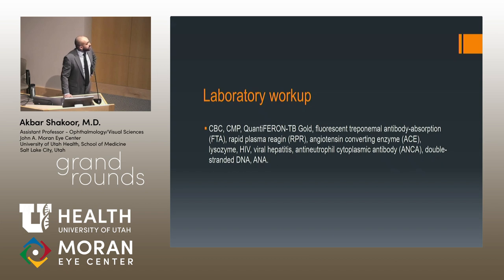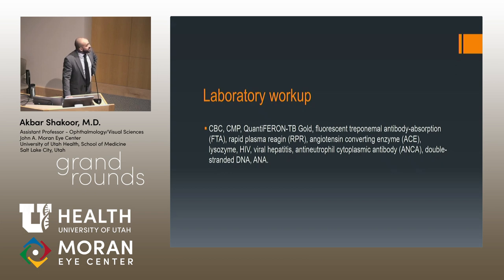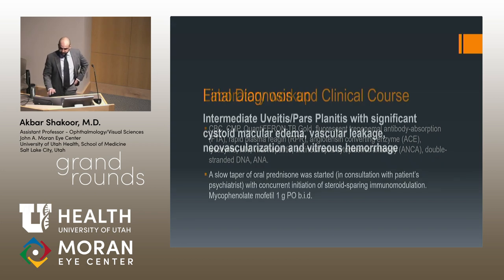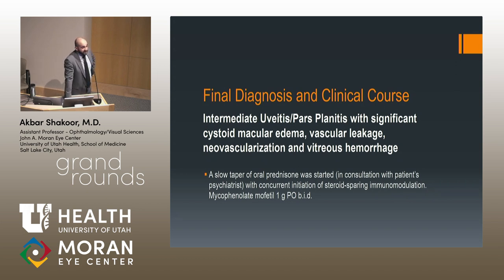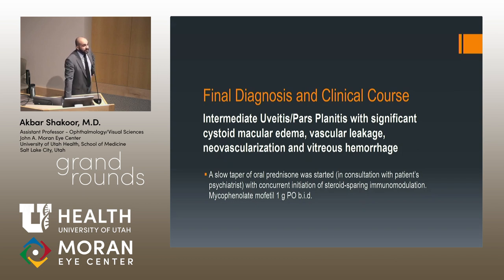We checked her for systemic issues. TB was negative, syphilis testing was negative, ACE, lysozyme, HIV, viral hepatitis — we looked for labs associated with retinal vasculitis and found them all to be negative. Our final diagnosis was intermediate uveitis of the pars planitis variety with significant cystoid macular edema, vascular leakage, neovascularization, and vitreous hemorrhage. We don't really know how long this had been going on, as she had been suicidal and had symptoms for three or four years.